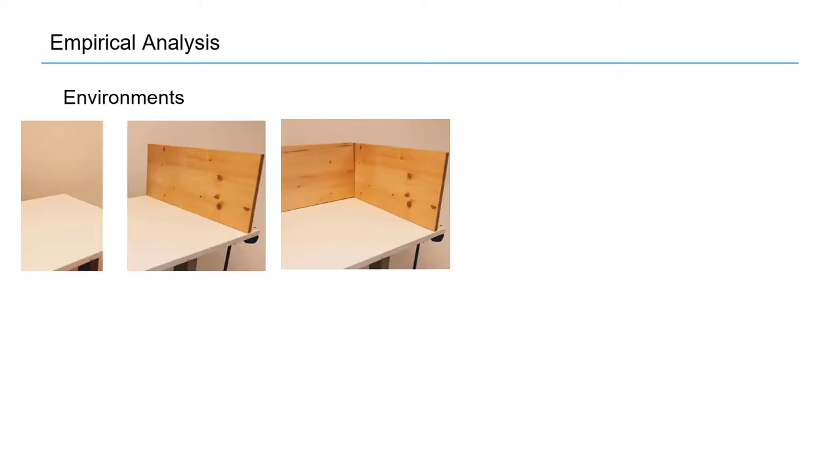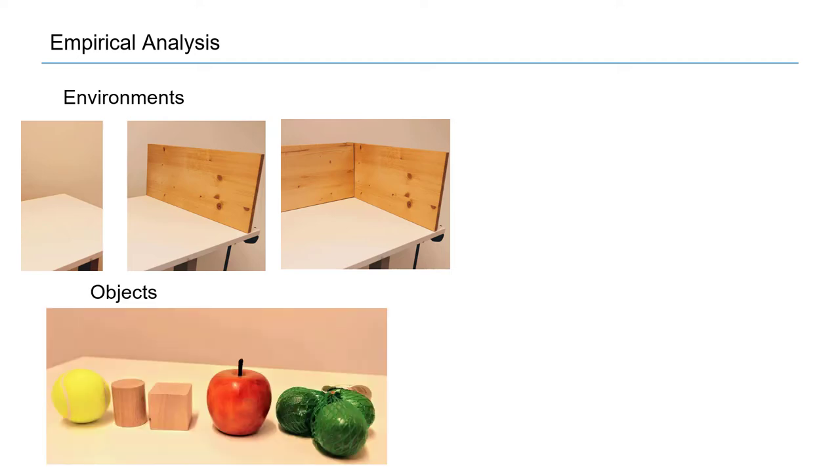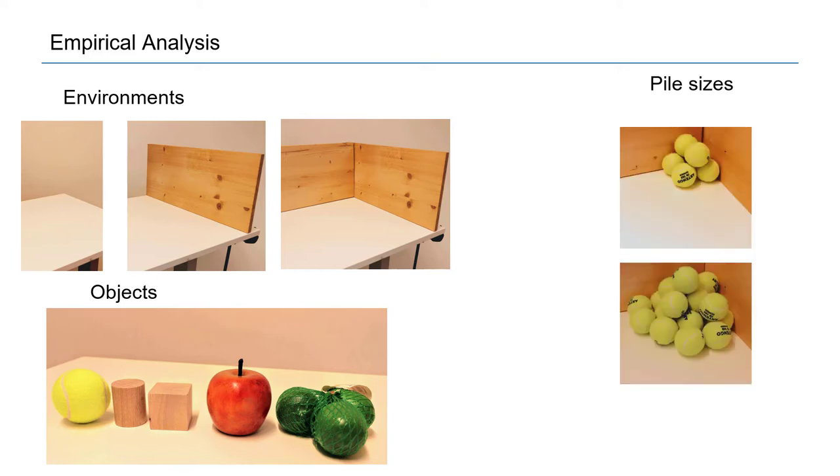In our paper we present an empirical study of this behavior by using a real robot and also in simulation. We use different environments: a simple table surface, a table surface with a wall, two walls that create a corner. We explore different types of objects, shapes, sphere cylinder cubes, irregular shapes, and different size of piles. A few objects or a lot of objects in the pile that was situated either on a flat surface, next to a wall, corner, or without any support.